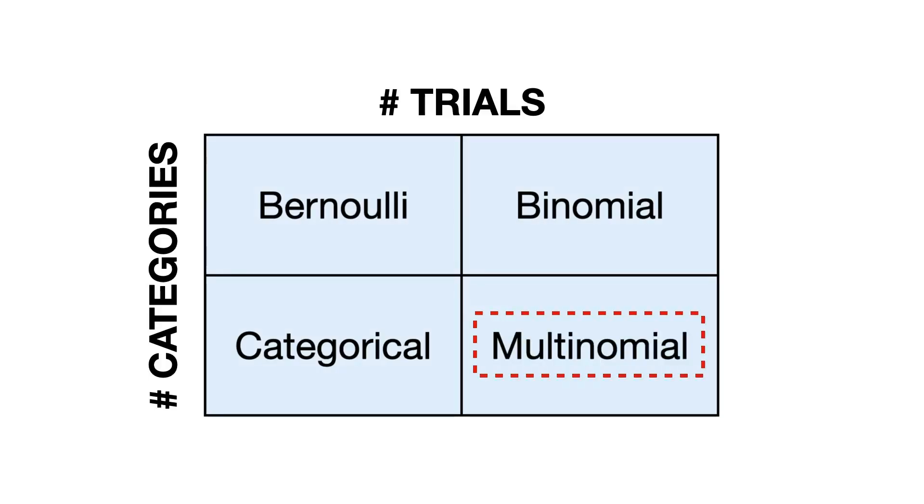Finally, on the right bottom of the table, we have the multinomial category, which has both multiple trials and multiple categories.